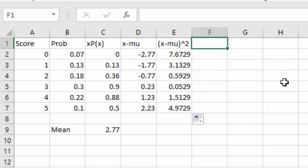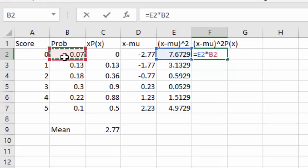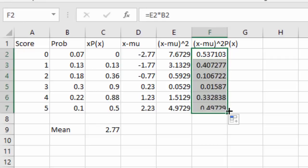Next thing we need to do is we need to multiply that by the probabilities. We've got the x minus μ squared, and we're going to multiply that by the probability of x. So we'll hit equals, select the x minus μ squared, times, select the probability, and when we hit enter it gives us the value. Grabbing the corner and dragging down gives us all of those values.